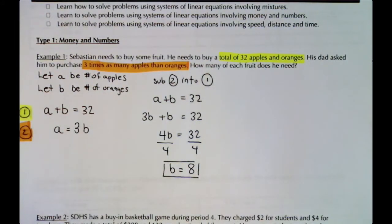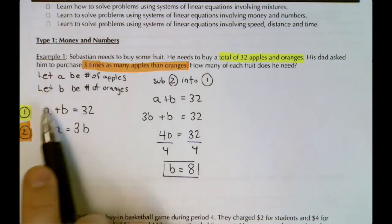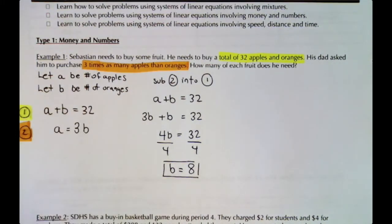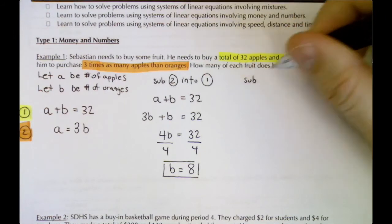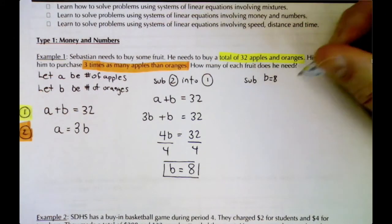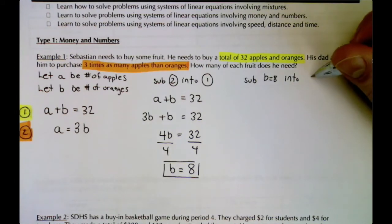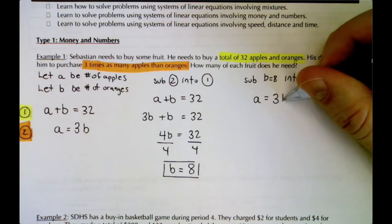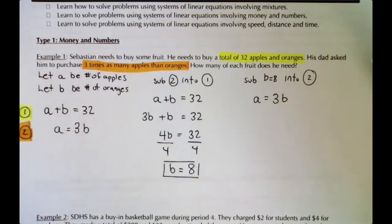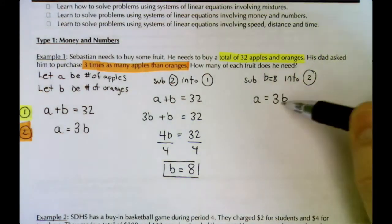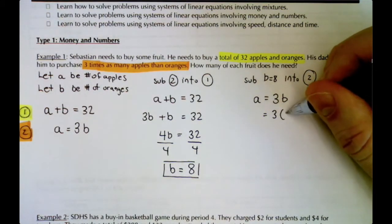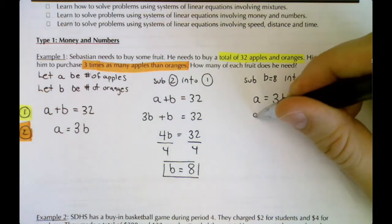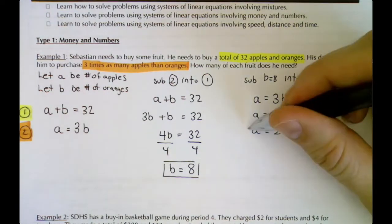Now we know there are 8 oranges. To find the number of apples, substitute into equation two: A = 3 × 8 = 24. So there are 24 apples.